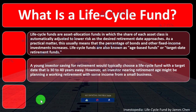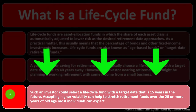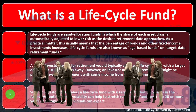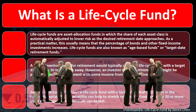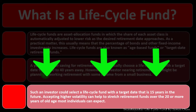As you get closer to the target, the mix between bonds, stocks, and more conservative investments shifts — with more conservative stuff going up automatically, which is a nice easy way to invest. A young investor saving for retirement would typically choose a life cycle fund with a target date 30 to 40 years away. However, an investor nearing retirement might select a fund with a target date 15 years in the future, accepting higher volatility to help stretch retirement funds over 20 or more years of old age.